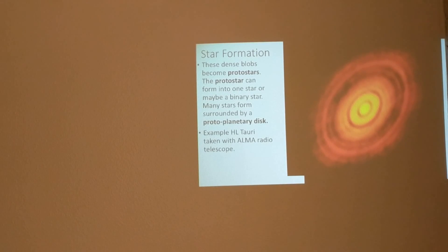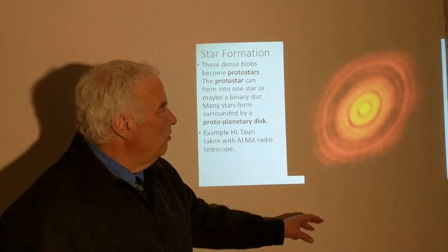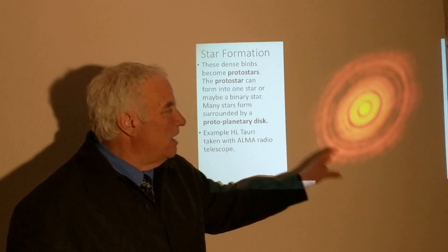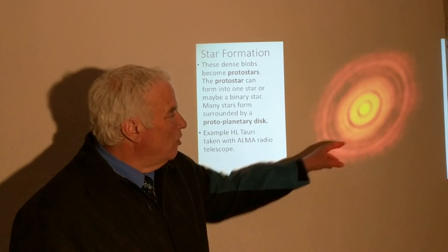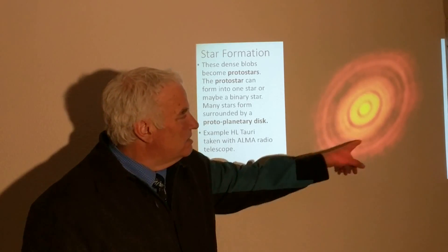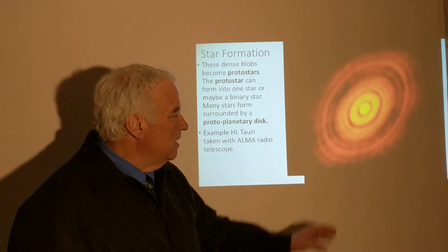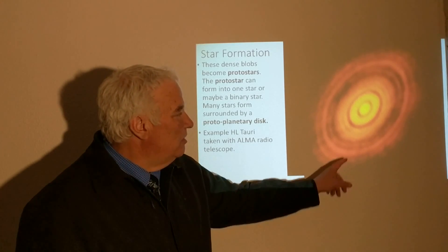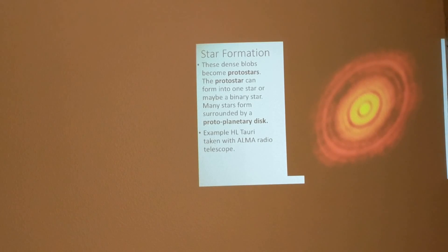This image taken by the ALMA radio telescope shows not only a star forming, but an entire disk of planets in the process of forming — a protoplanetary disk. The gaps in the disk are where planets are sweeping out material as they form. This is a very recent image of the protoplanetary disk around a star called HL Tauri.